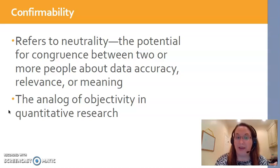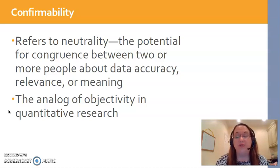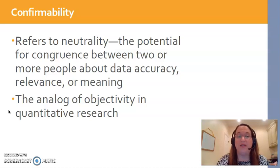What I was just describing refers to confirmability. That means two or more people need to make sure that the data is accurate and that the data's meanings are accurate based on how they've been interpreted from what the participants said. This has to do with objectivity in quantitative research. You should see somewhere in qualitative articles where they've talked about two or more researchers going through the data analysis process.